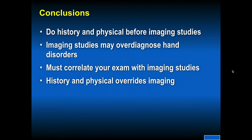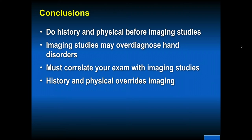Do a history and physical before imaging studies. Get the appropriate x-rays based on what you feel the diagnosis is — cone views, oblique views, depending on what joint and bone is involved. Imaging studies may over-diagnose hand disorders; an MRI scan can over-diagnose problems whether in the hand or the foot. You must correlate your exam with imaging studies. History and physical overrides imaging.